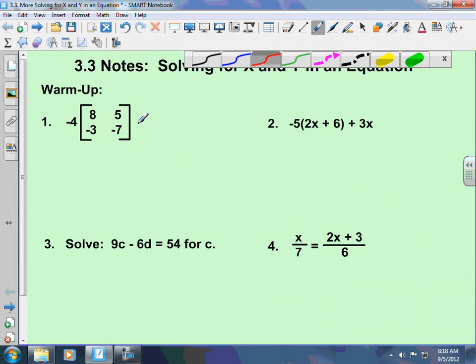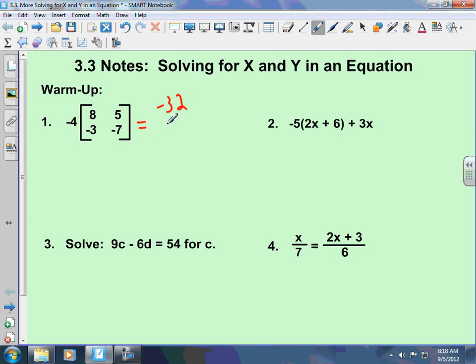Okay, I need to multiply negative 4 to everything in here. Negative 4 times 8 is negative 32. Negative 4 times negative 3 is positive 12. Negative 4 times 5 is negative 20. Negative 4 times negative 7 is positive 28. And make sure you put them in the brackets.